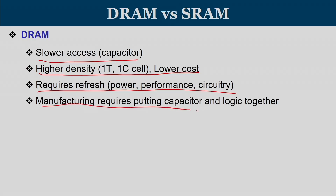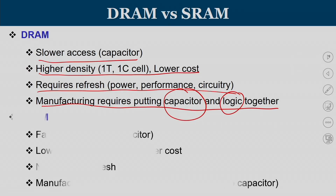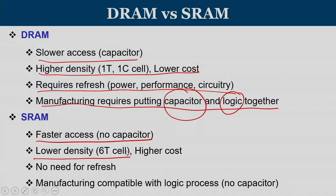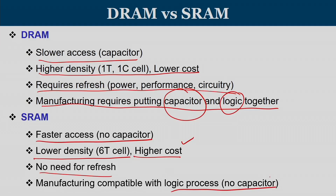Because of the leakage property of the capacitor, a refresh circuitry is required, which is power-hungry and affects performance. Manufacturing requires extra overhead because semiconductor logic and a capacitor must be integrated together. SRAM, having no capacitor — only transistors — offers faster access since all components are electronic. However it has low density because storing 1 bit requires 6 transistors, making it higher cost. Since there is no capacitor there is no leakage, so no refresh is required, and manufacturing is simpler.